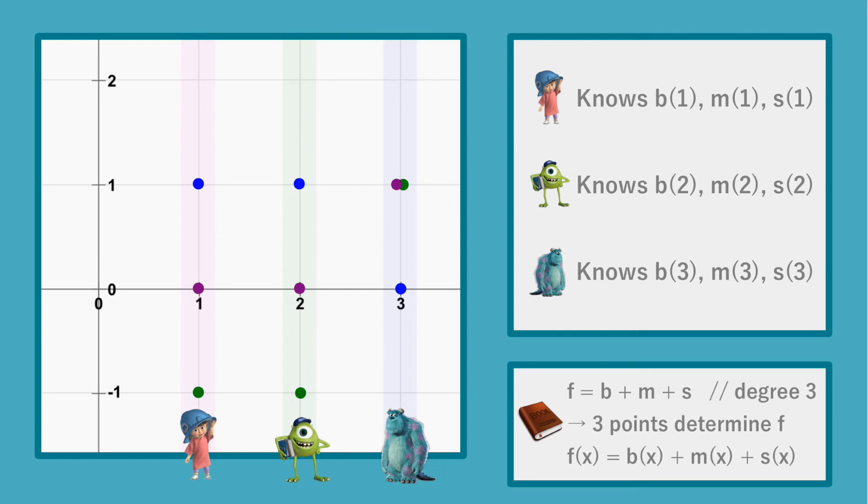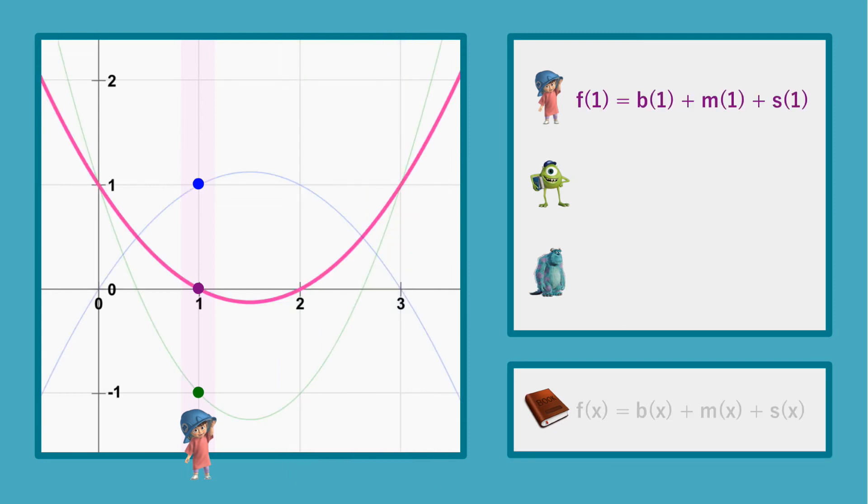So yes, that means that Boo can compute f(1), Mike can compute f(2), and Sully can compute f(3), all by simple addition. So, Boo computes f(1) as 0 plus minus 1 plus 1, which is 0. She releases this result of adding the shares publicly.